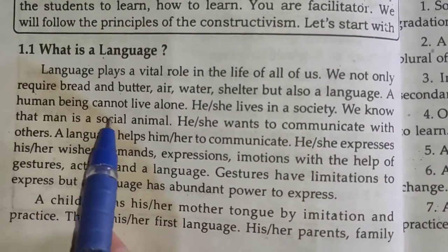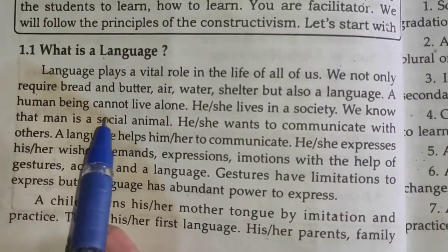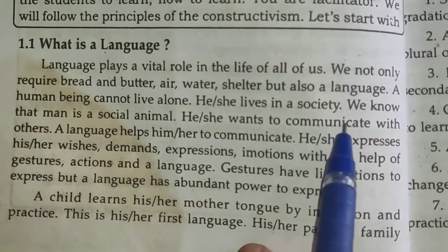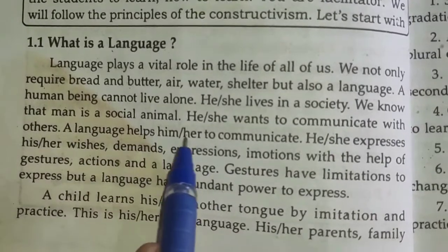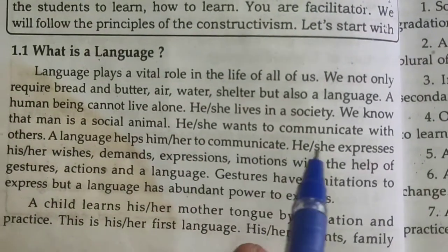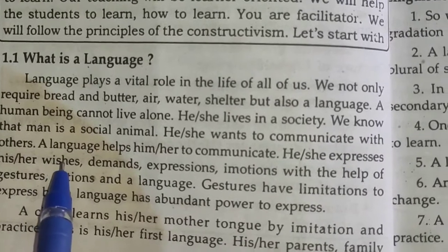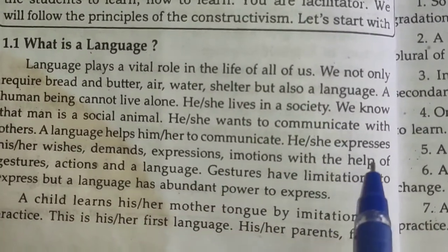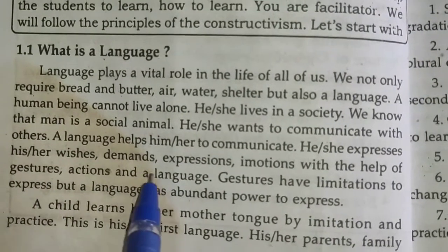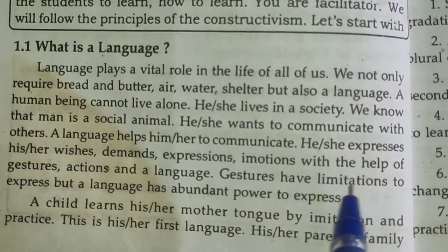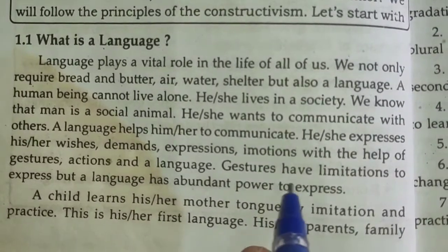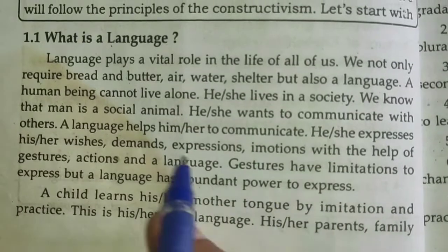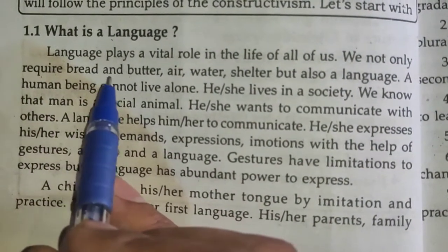A human being cannot live alone — he or she lives in a society. We know that man is a social animal. He or she wants to communicate with others. A language helps him or her to communicate. He or she expresses wishes, demands, expressions, and emotions with the help of gesture, action, and language.